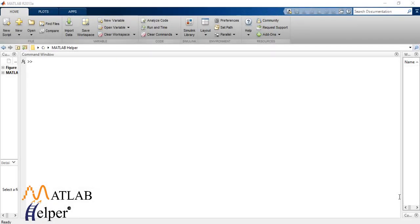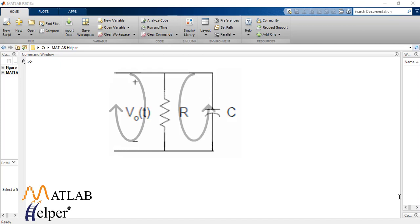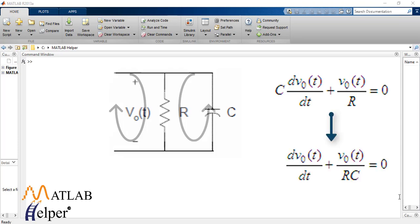RC circuit also called as RC network is shown in the figure. We can use Kirchhoff's current law (KCL) to write down the following equation: C dVout/dt + Vout/R = 0. We can rearrange the same equation into dVout/dt + Vout/RC = 0.